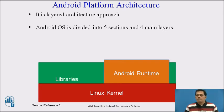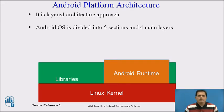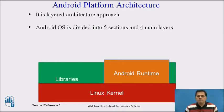The Android runtime resides at the same layer as the libraries. It provides a set of core libraries that enable developers to write Android apps using the Java programming language. Android runtime also includes the Dalvik virtual machine, which enables every Android application to run in its own process with its own instance of the Dalvik virtual machine. Android applications are compiled into the Dalvik executable format. Dalvik is a specialized virtual machine designed specifically for Android and optimized for battery-powered mobile devices with limited memory and CPU.